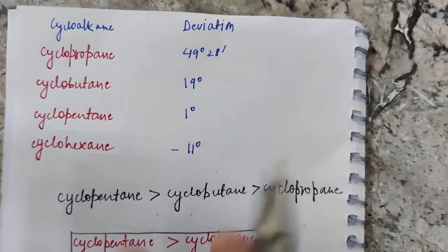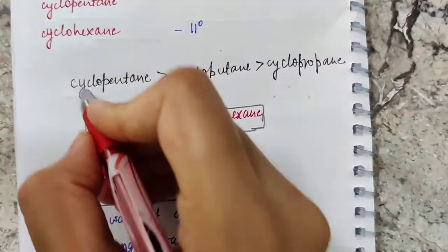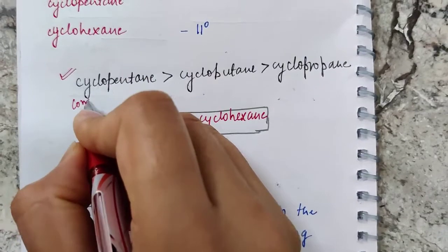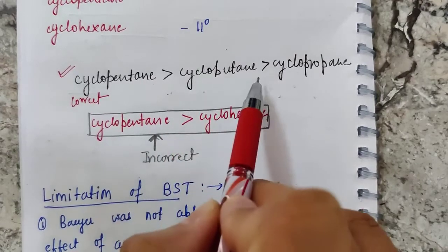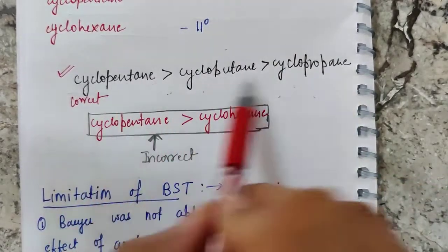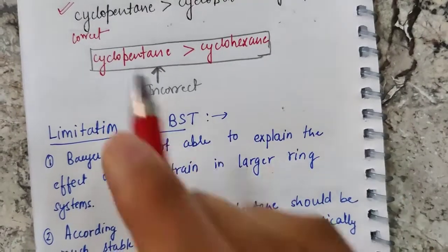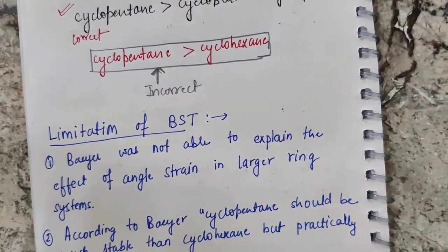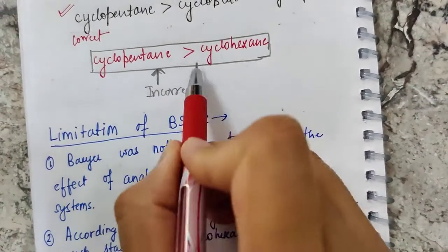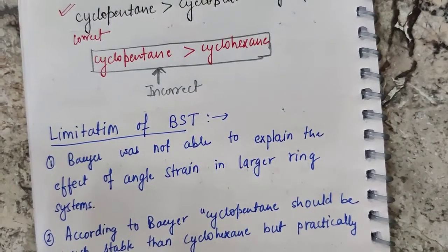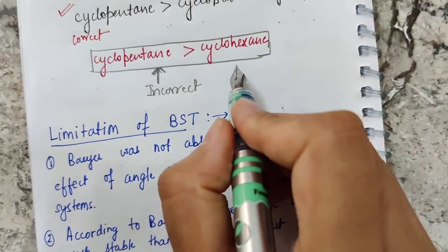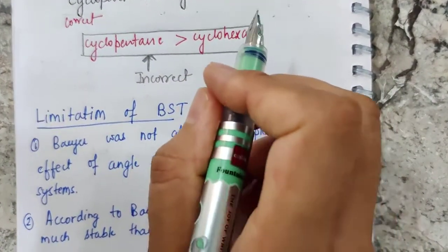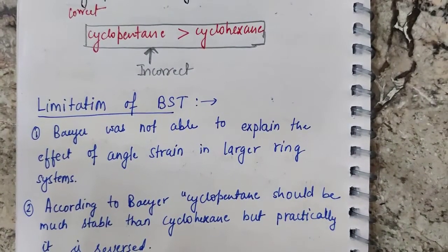This table gives the cycloalkanes and their respective deviations. The correct stability order is: cyclopentane > cyclobutane > cyclopropane. The incorrect statement suggested by Baeyer's strain theory is that cyclopentane is much more stable than cyclohexane — this is incorrect, and it was found to be wrong by studying the reactivity of both compounds.